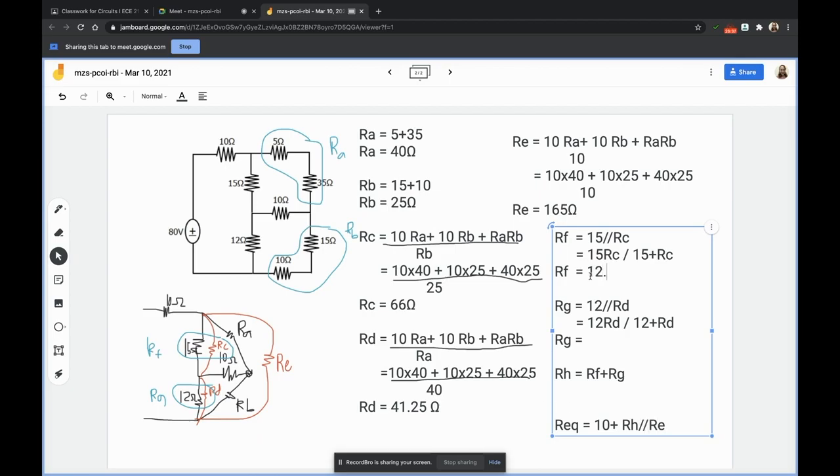R equivalent will be equal to 10 plus RH parallel sa Rf, 12.222 ohms and RG 9.295 ohms. RH is equal to 21.558 ohms, then the R equivalent 29.035 ohms.